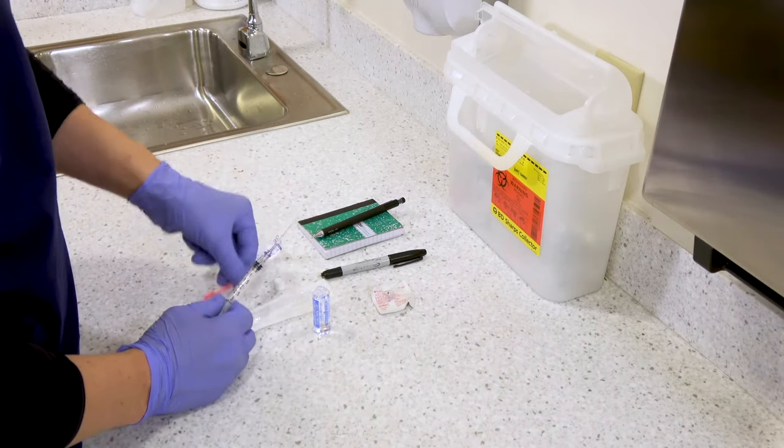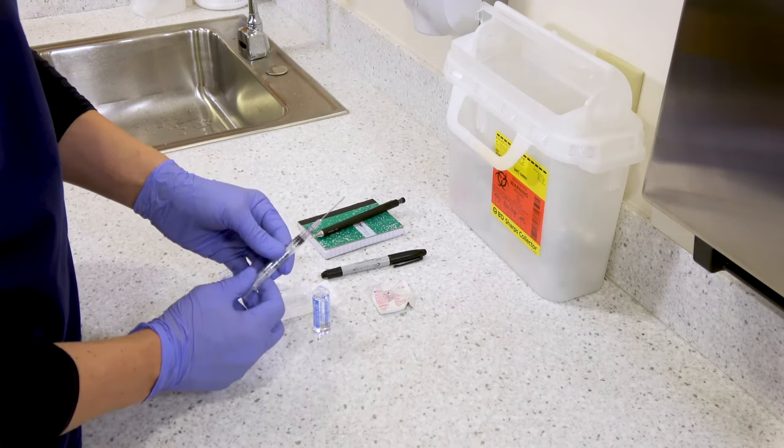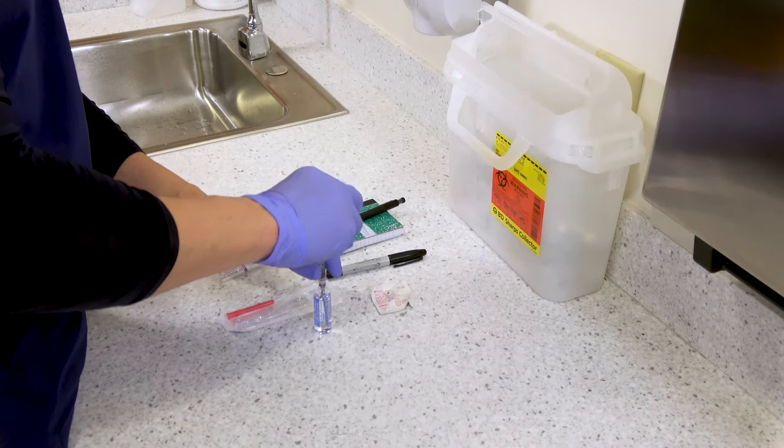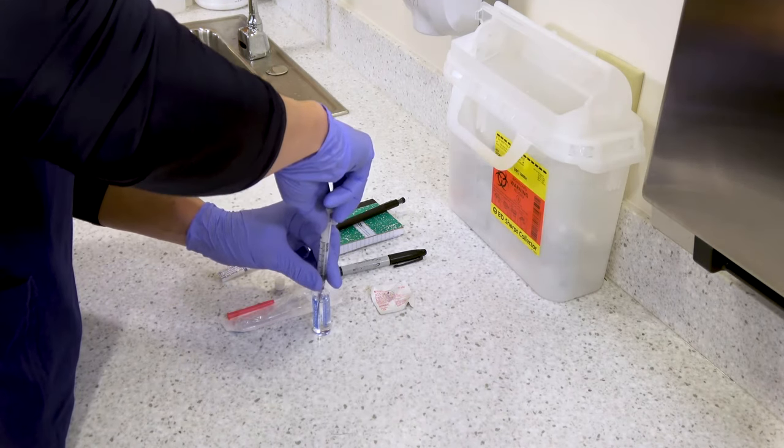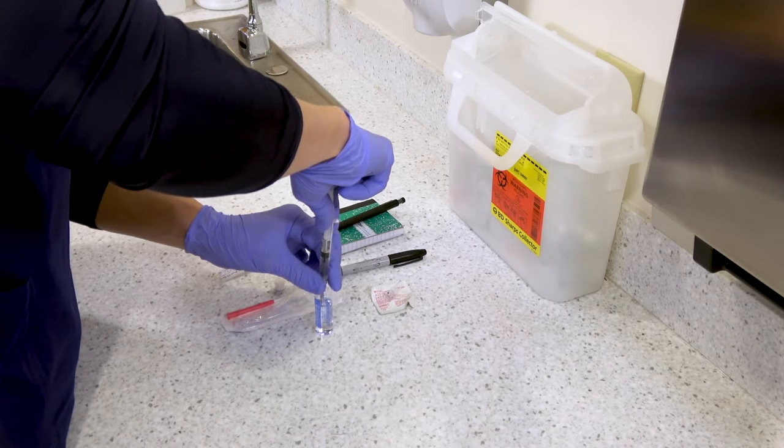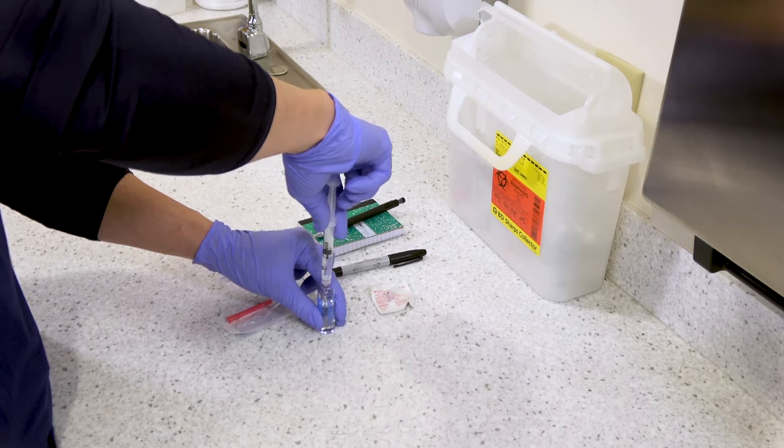Now you can grab your syringe with your filter needle, uncap it, and you're going to insert it into the ampule and withdraw the correct amount of liquid from the ampule. You may need to tilt the ampule to get the liquid if your needle's not long enough to go to the bottom.